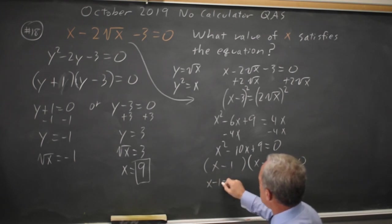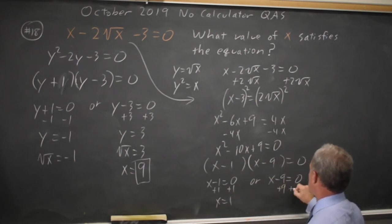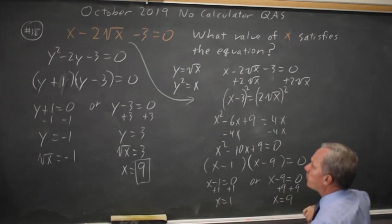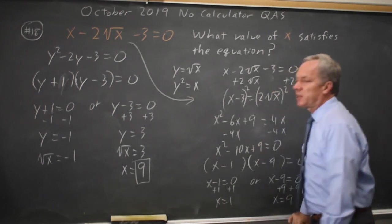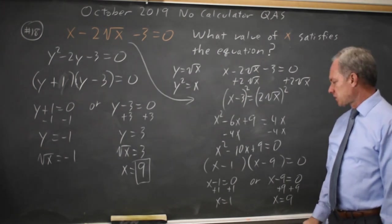So either x minus 1 equals 0, x equals 1. Or x minus 9 equals 0, x equals 9. Now, we've got a problem. They asked for the value of x, not one possible value. So only one of these actually works.